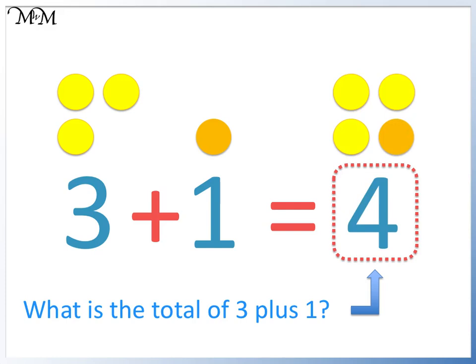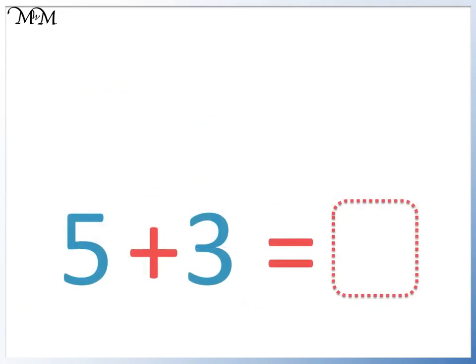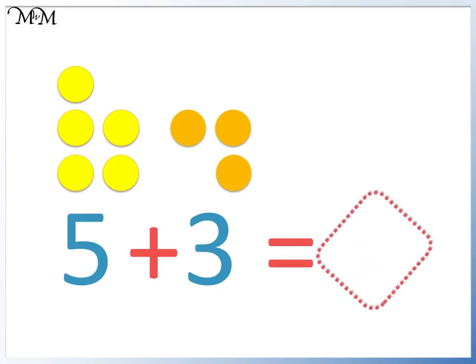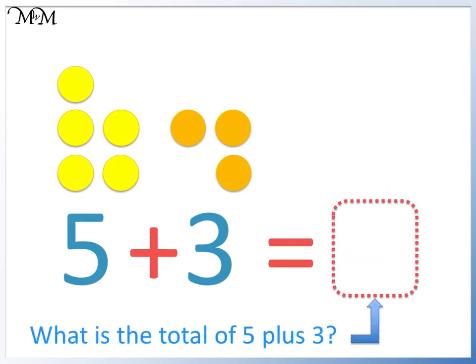In an addition, the total can go on the opposite side of the equal sign. Here we have 5 add 3. The number after the equal sign will be the total of 5 add 3.